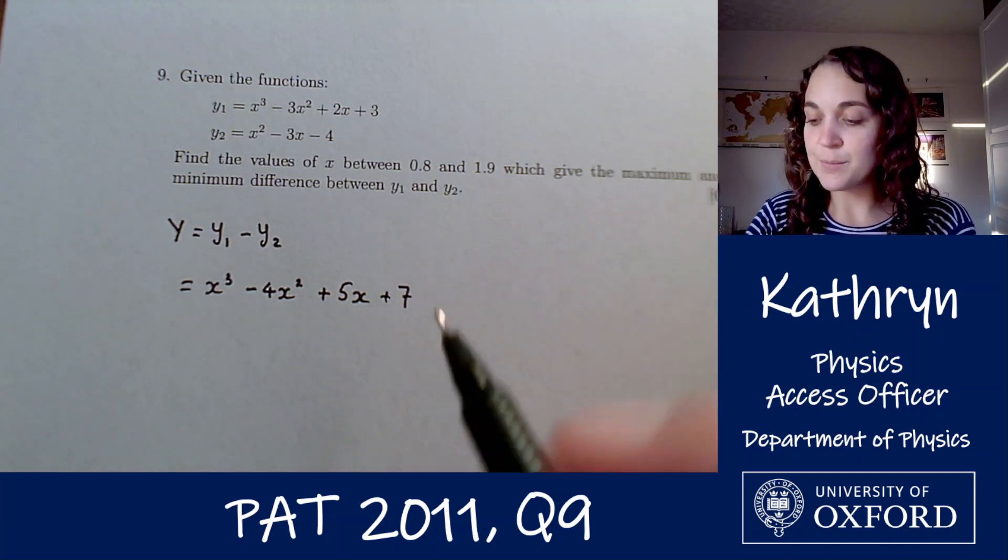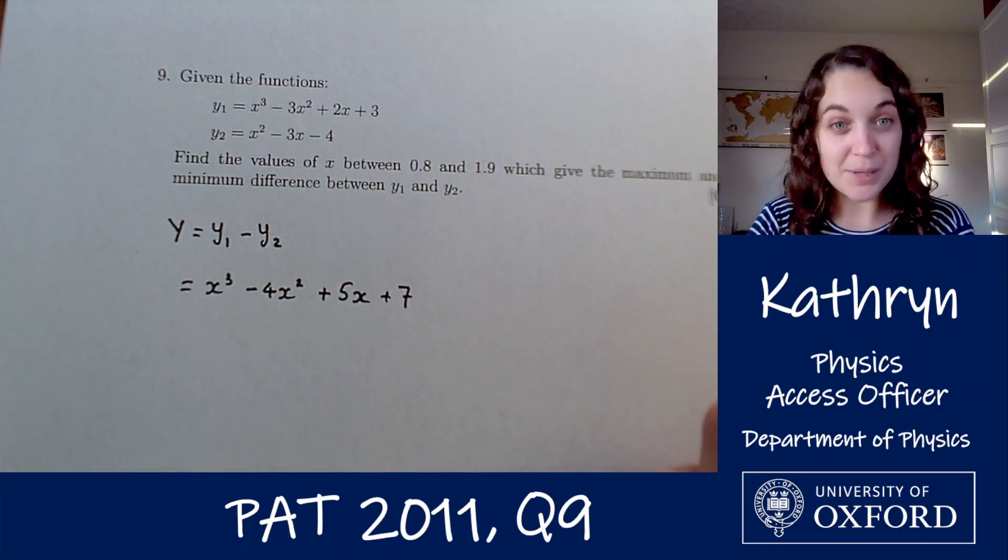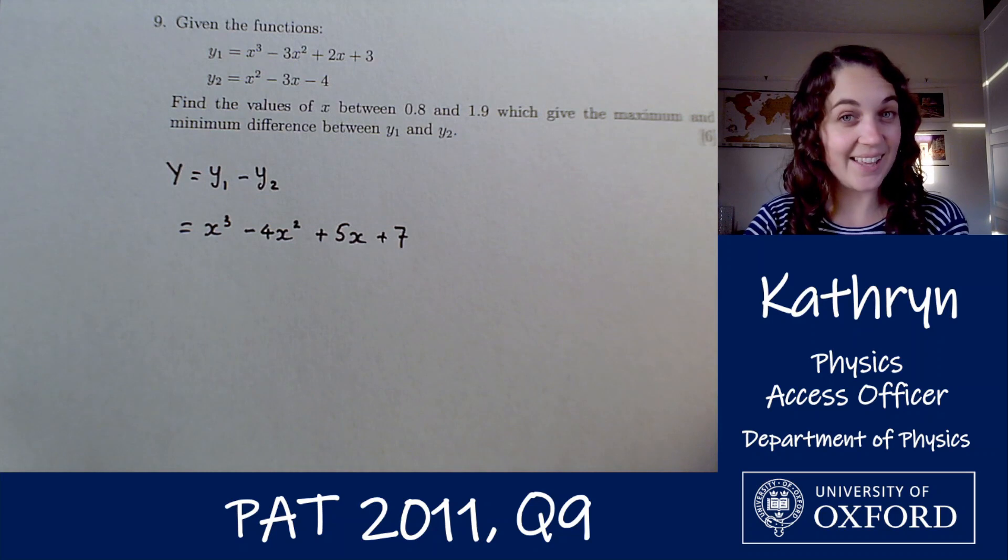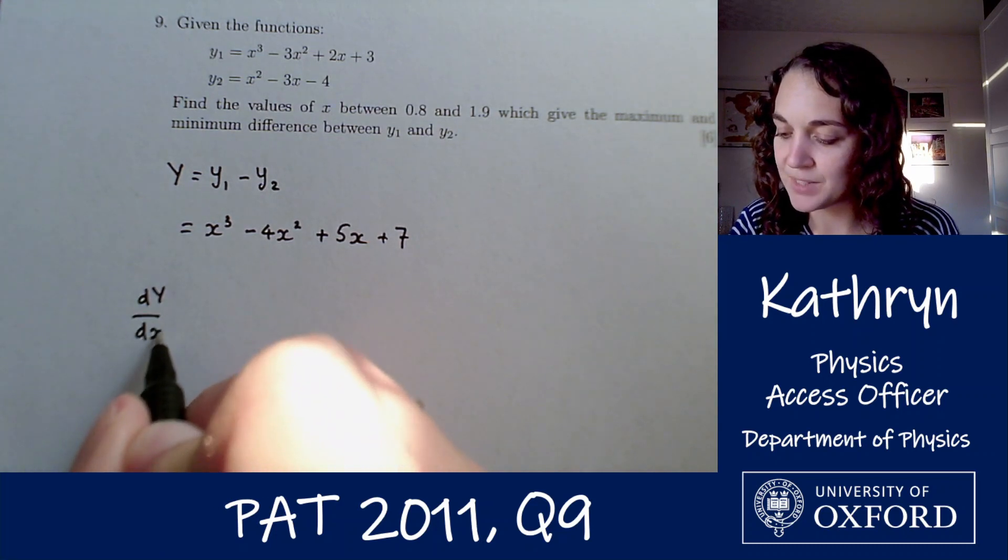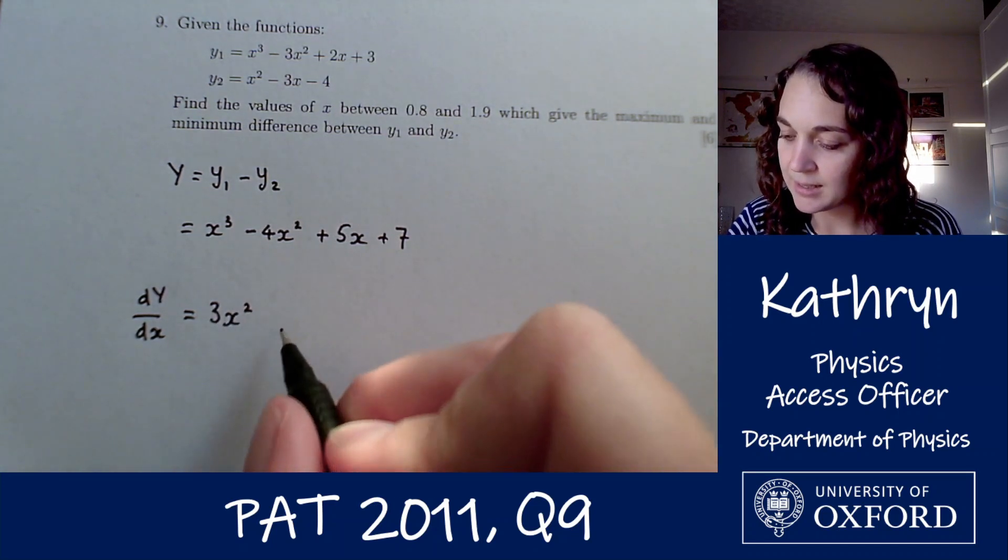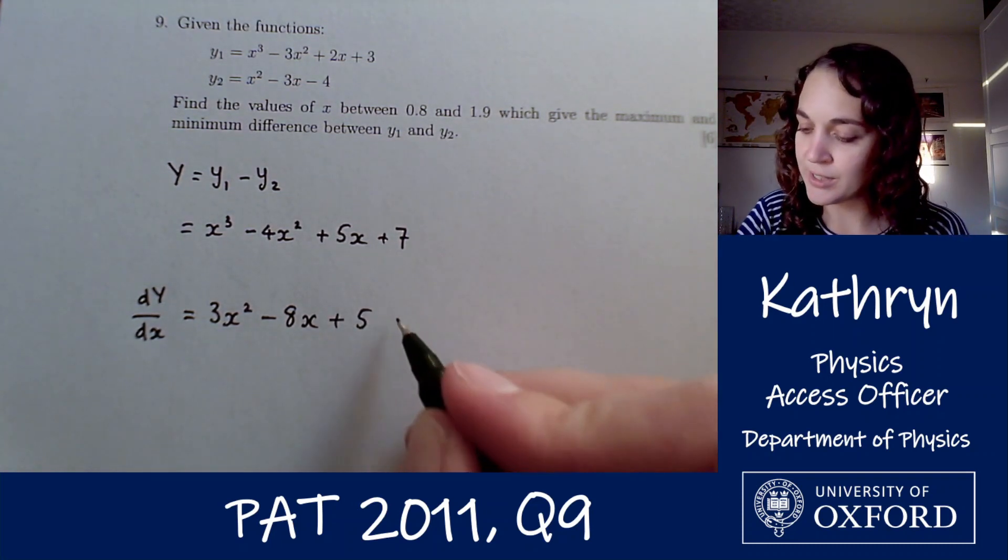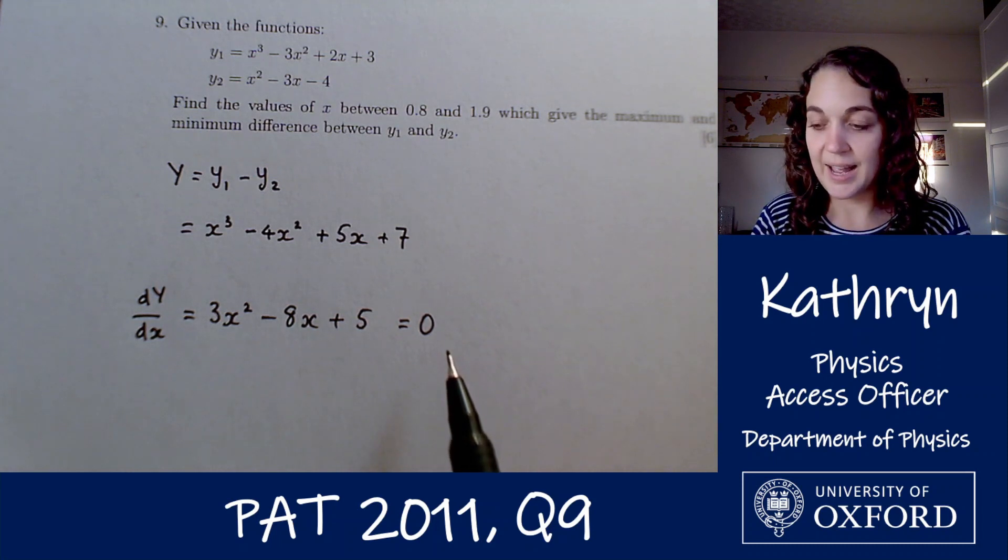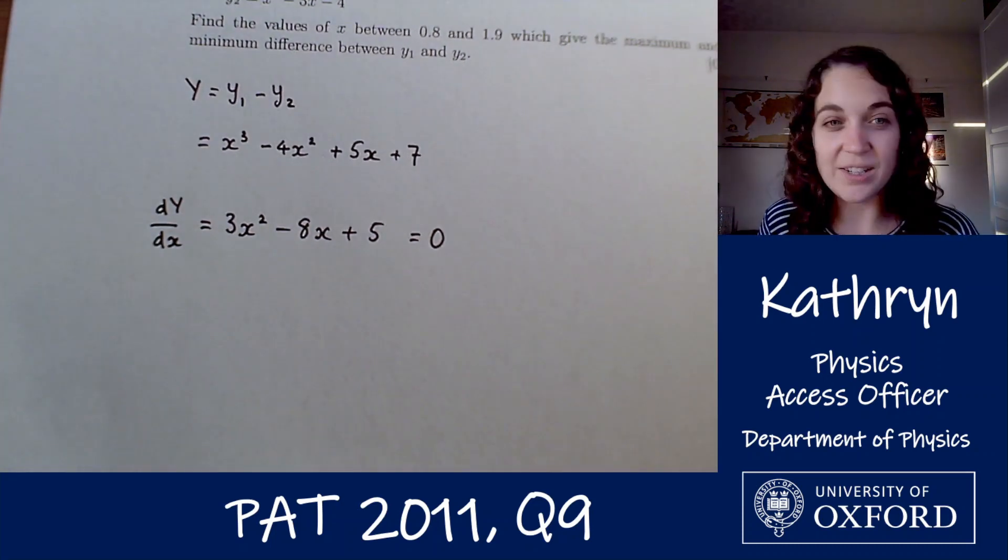Now what we want to do is find the maximum and minimum values or the points at which this function is maximized or minimized. So the standard way to do that would be to differentiate it and set the derivative to 0. So dY by dx equals 3x squared minus 8x plus 5, and looking for turning points so set that equal to 0. So now we've got a quadratic and we want to know the x values where this is 0.